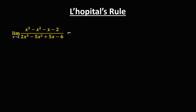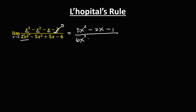For the next given: the derivative of x to the power 3 is 3x to the power 2, minus the derivative of x squared which is 2x, minus the derivative of x which is 1, and the derivative of a constant is 0. Over: the derivative of 2x to the power 3 — 3 times 2 is 6x squared, minus 2 times 5 which is 10, so minus 10x, plus the derivative of 5x which is 5, and the derivative of a constant is 0.